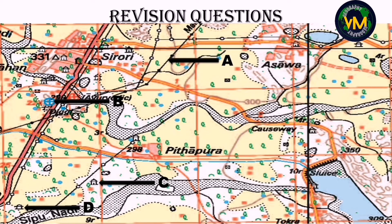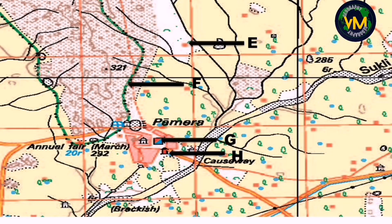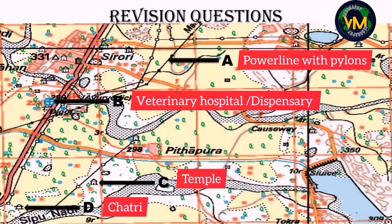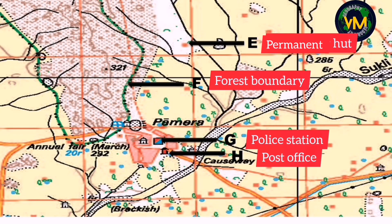We have come to the end of our video. Here are some revision questions — try to identify these conventional signs and symbols in under five minutes. Here are the answers. I hope you understood all the conventional signs and symbols clearly. Make sure you are thorough with these symbols so that you can answer them very quickly during the board exam.